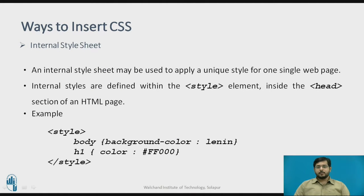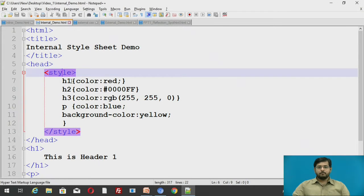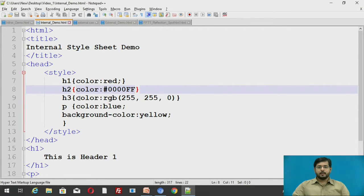Internal style sheet is used where you can apply the style to all the elements used in a single page. In this example, h1 is given a particular color and the body is given a particular background color — this will be applied wherever h1 is used in the complete web page. Internal CSS is written in a head tag followed by a style tag, where we write particular properties and their values.